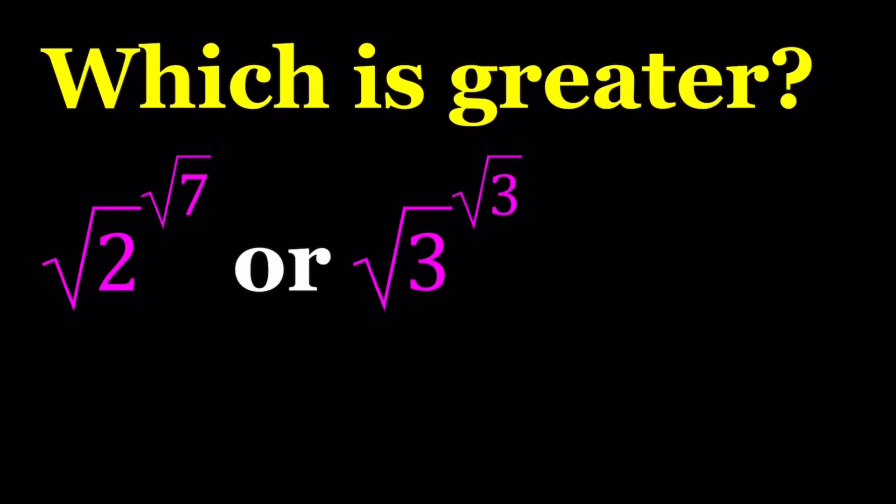Hello everyone. In this video we're going to be comparing two numbers, two very irrational numbers. We have square root of 2 to the power square root of 7 and square root of 3 to the power itself. And we're going to try to find out which number is greater.